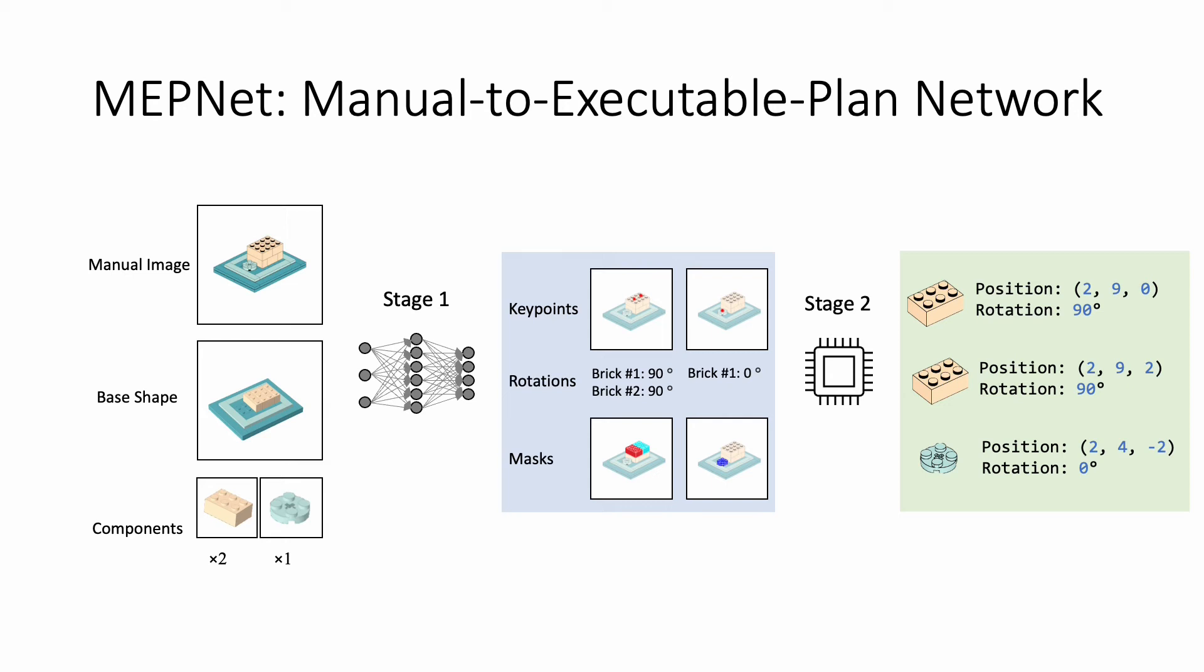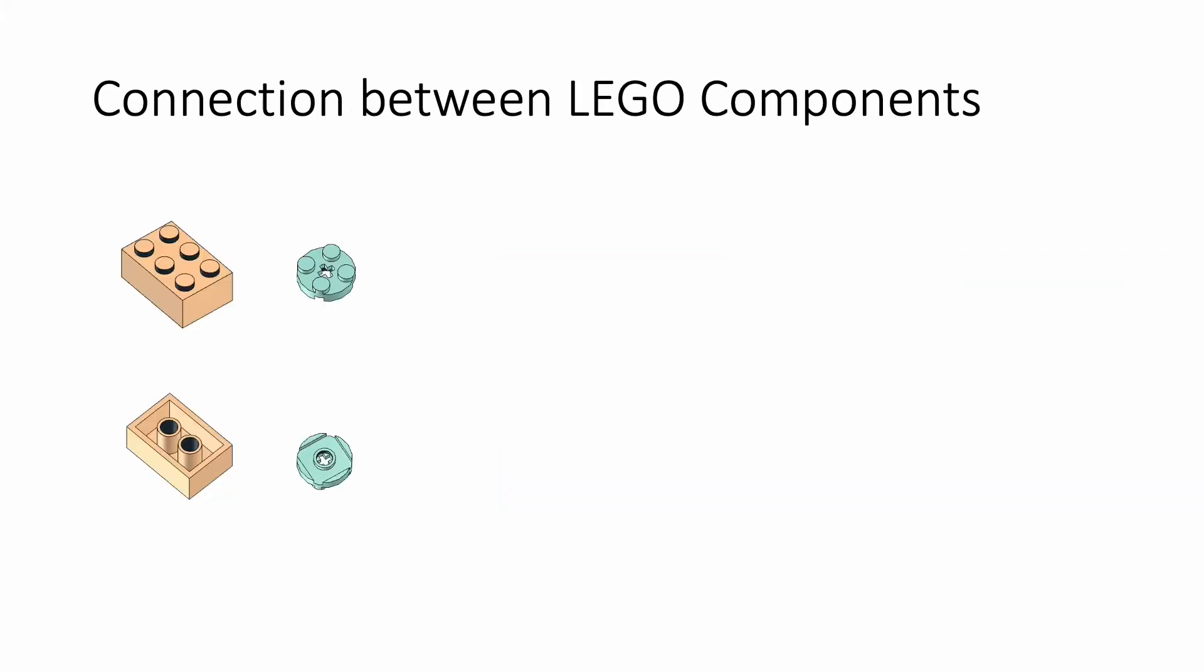In this video, we will focus on explaining the second stage algorithm, which does not require any learning parameters. Here, we leverage the connection constraint between components to infer the 3D translation. Connection constraint is an important feature of object assembly, which makes the object stable and safe. For LEGO objects, connections are performed between certain parts of the bricks called studs and anti-studs. Every time when we assemble a new component onto the base shape, we are inserting at least one stud from the base shape to some anti-stud of the new component.